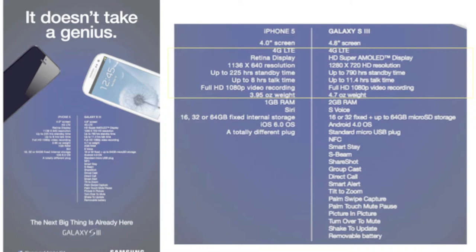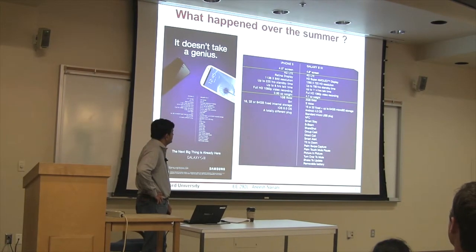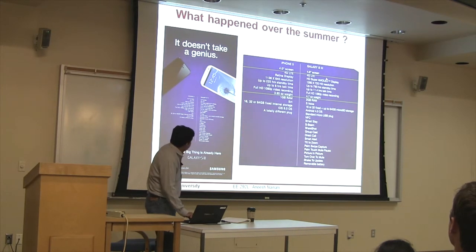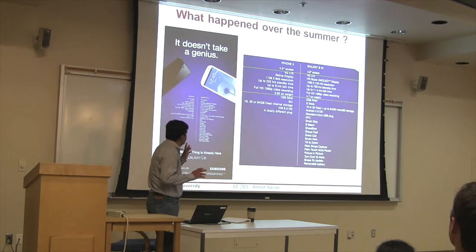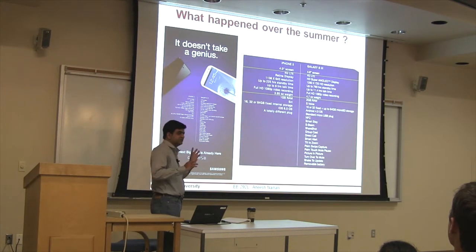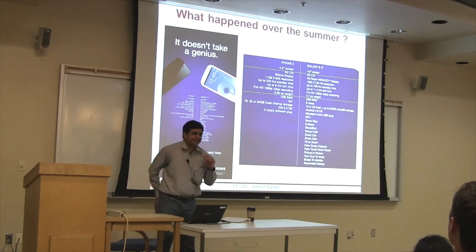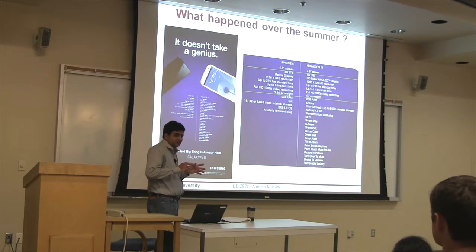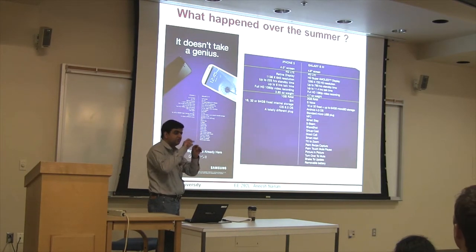Retina Display versus AMOLED — AMOLED stands for Active Matrix Organic LEDs. We'll understand what that means in the lecture on displays. Samsung claims a bigger screen size and full HD, which is 1280 by 720p. The iPhone 5 is not full HD — it's 640p. By the way, the videos for this class are full HD and you can watch them in full HD. YouTube auto-detects your connection and gives you the best resolution for your network speed, but there's a button to switch it to full HD manually.